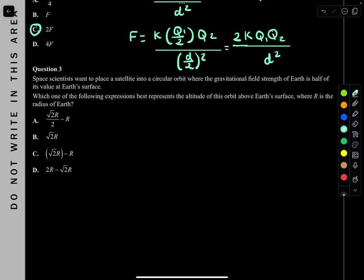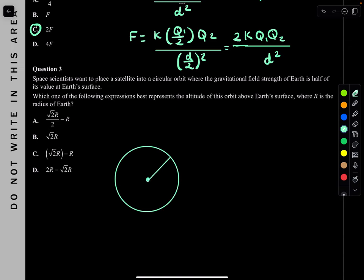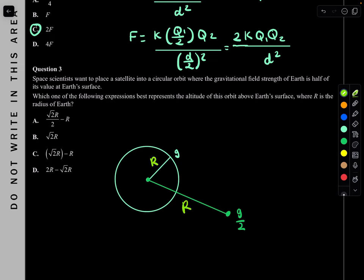Question 3. Space scientists want to place a satellite into a circular orbit where the gravitational field strength of Earth is half its value at the surface. At the surface, the field strength is G, and we want G/2 at the new orbit. The most common formula to use here is G1/G2 = (R2/R1)². Which of the following best represents the altitude of this orbit above Earth's surface, where R is the radius of Earth?